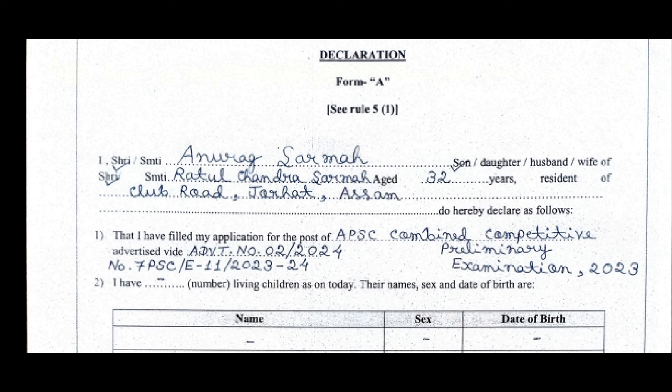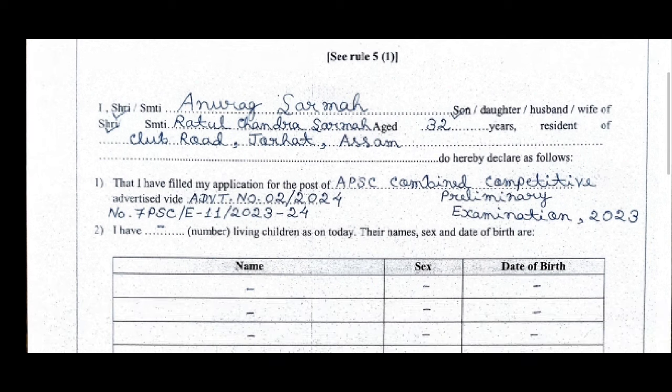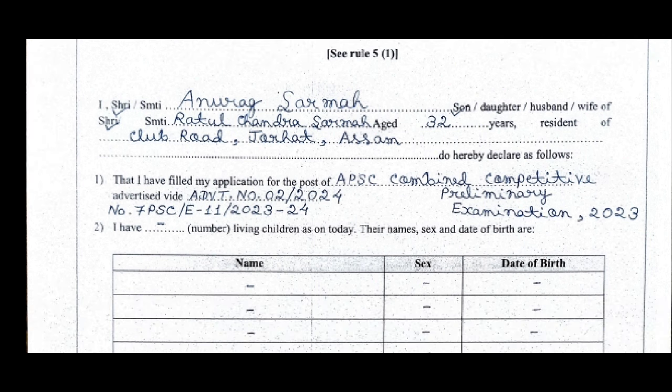You can write Declaration Form A. You can write the name of the son, daughter, husband, or wife. You can write the name of the tenant and the resident, along with your exact location, district, or state. You can write the application for the post of APSC Combined Competitive Preliminary Examination 2023, as advertised by advertisement number.